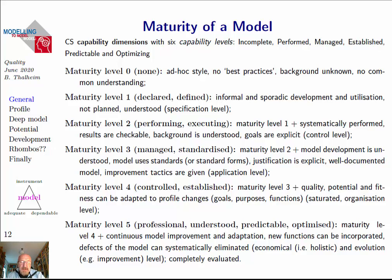At maturity level 0, anything is done ad hoc with no best practices — typical for layman modelers or those learning to model. At maturity level 1, things are well declared, well defined, and understood. Maturity level 2 means modeling activities are performed and executed in a systematic way, results become checkable, the background is well understood, and goals are explicit. Maturity level 3 means the model development is well understood, the modeling process uses standards, justification is explicit, models are well documented, and improvement tactics are given.